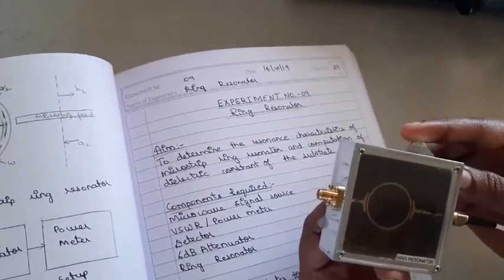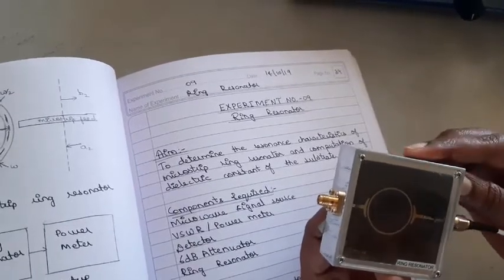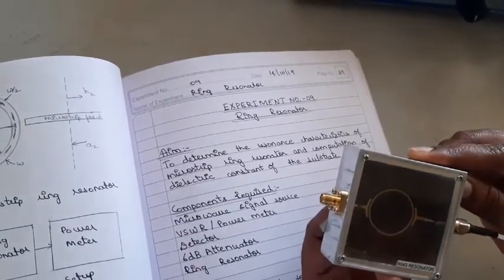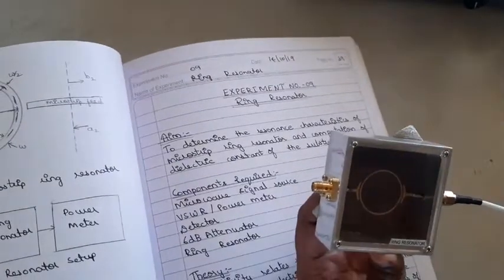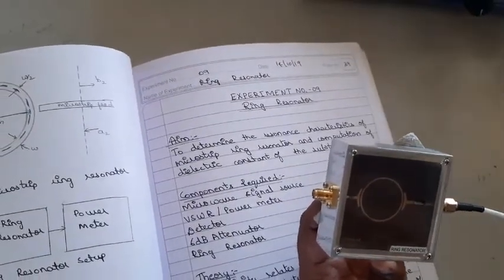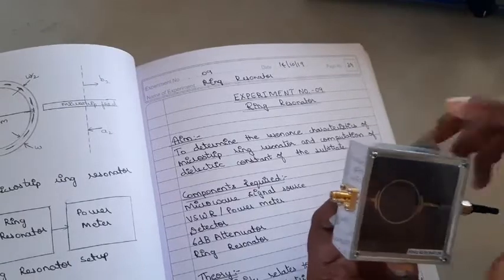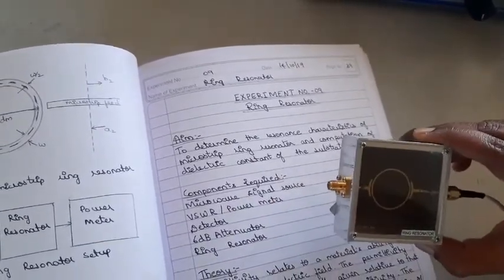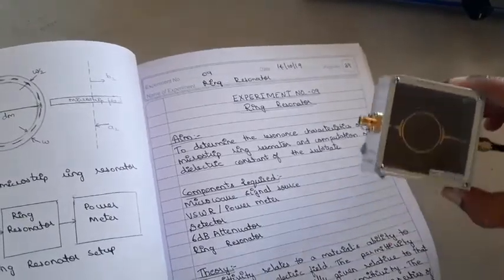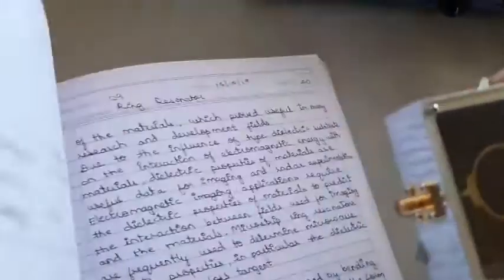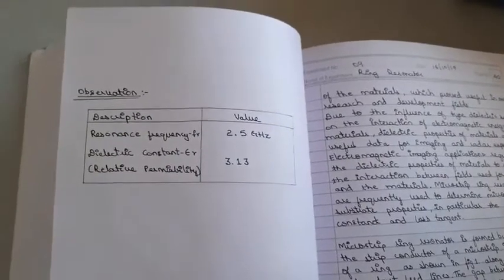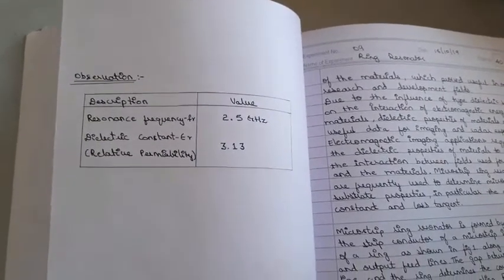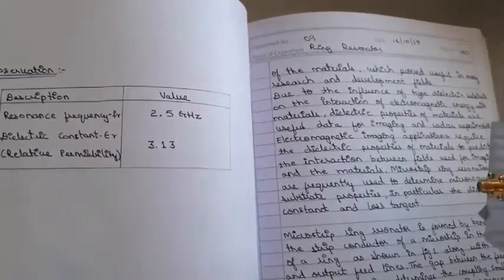As given in the data sheet, the dielectric constant of this duroid material is 3.13. Now, practically we have to obtain the resonant frequency of this particular substrate, and using that resonant frequency we have to find the dielectric constant of this duroid material. The microstrip ring resonator is formed by bending a strip conductor of a microstrip in the form of a ring.